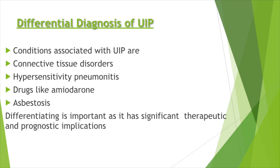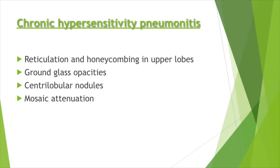We need to know the differential diagnosis of UIP to understand whether we are looking at idiopathic pulmonary fibrosis or a UIP-like pattern seen in secondary causes. Differentiating them is important as it has significant therapeutic and prognostic implications. The main diseases in the differential include connective tissue disorders, hypersensitivity pneumonitis, drugs like amiodarone, and asbestosis.